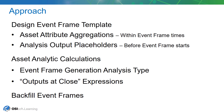Then we're going to move to asset analytics. We'll be adding an event frame generation analysis to the dryer template that we've been working in in the previous examples. We're also going to be using a special function that's relatively new to event frames called outputs at close. This will allow us to create an expression that we can calculate once the event frame stops or ends and add that to our event frame template. It's a really powerful way to add more information around an event frame to help in its analysis. Finally, we'll go ahead and backfill the event frames, and this should set things up for the next session when we're going to go in and build some predictive models using this data.